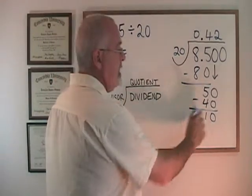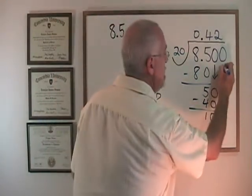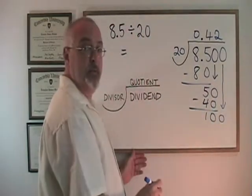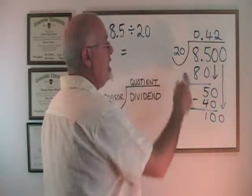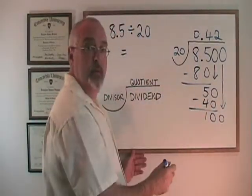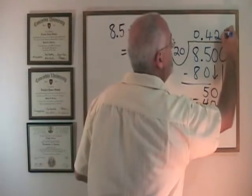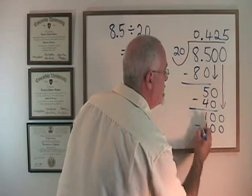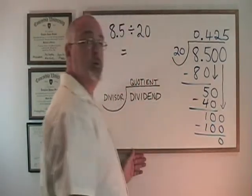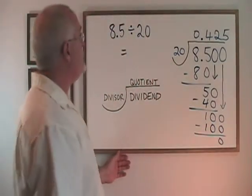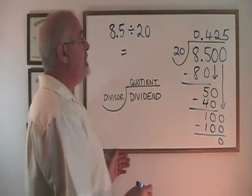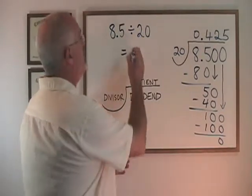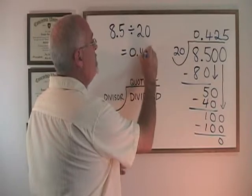20 will not fit into 10, so I have to slide down another 0. And now I have 100 down here. 20 does fit into 100 five times. I write the 5 here. 5 times 20 is 100. I subtract and I get 0, which means that I am finished. This means that the answer to 8.5 divided by 20 is 0.425.